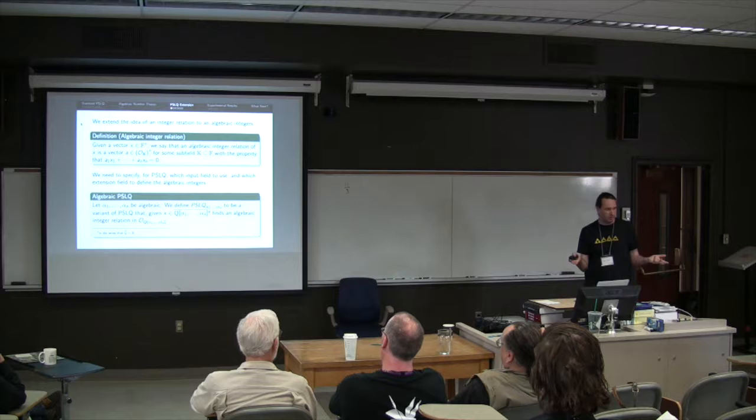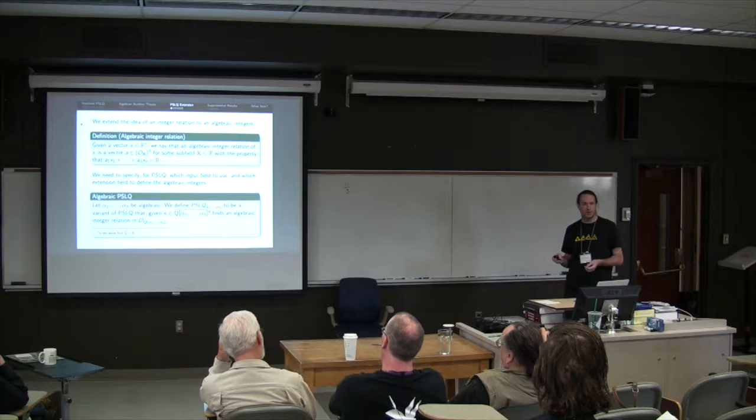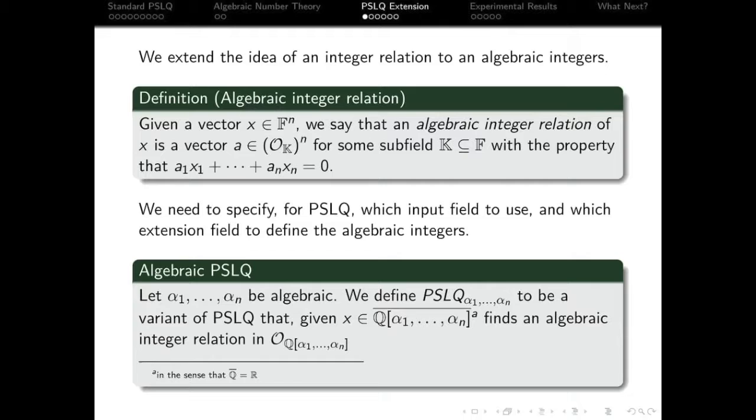Took some going and we finally hit on the idea that, well, we're coming up with an integer relation. We've got algebraic extension fields that are algebraic integers. So it probably makes sense to come up with a relation that has algebraic integers. So that's what this definition here is giving us. So essentially, if we've got some field, an algebraic integer relation is just an integer relation where the elements of the integer vector are from a ring of algebraic integers. It's pretty much the obvious extension.